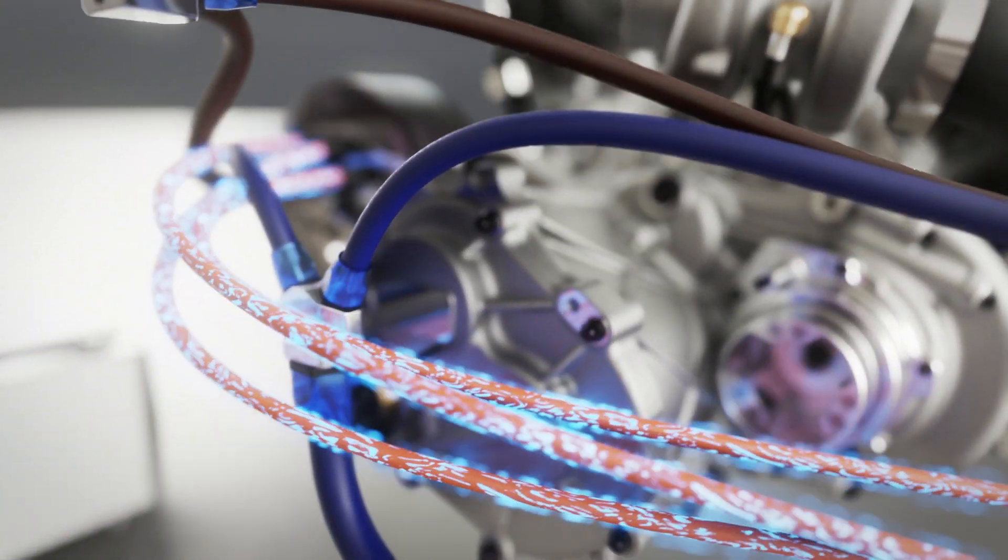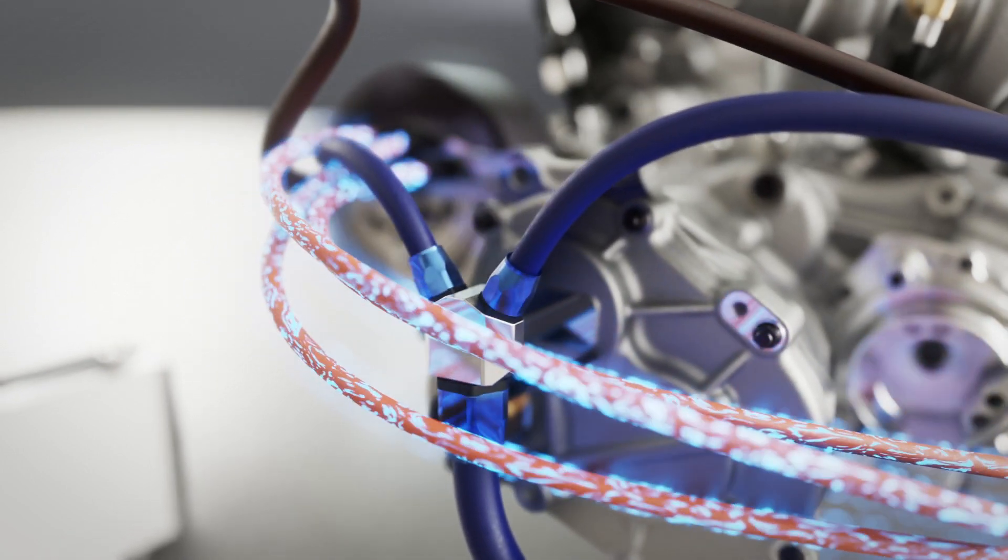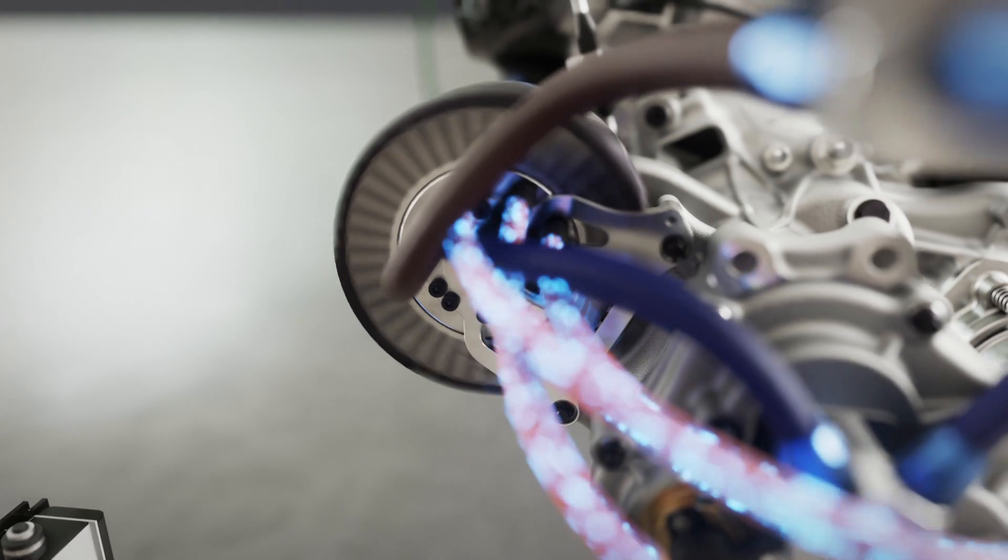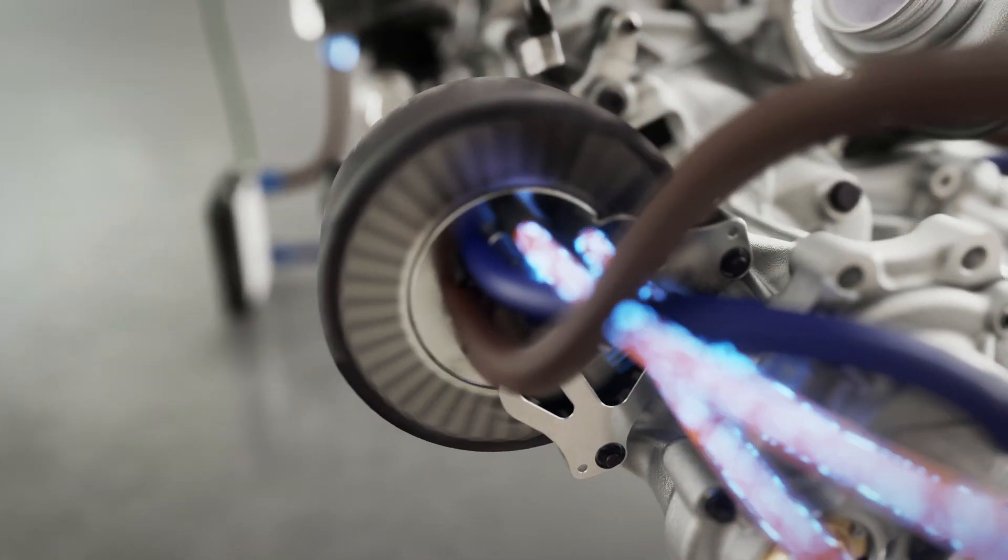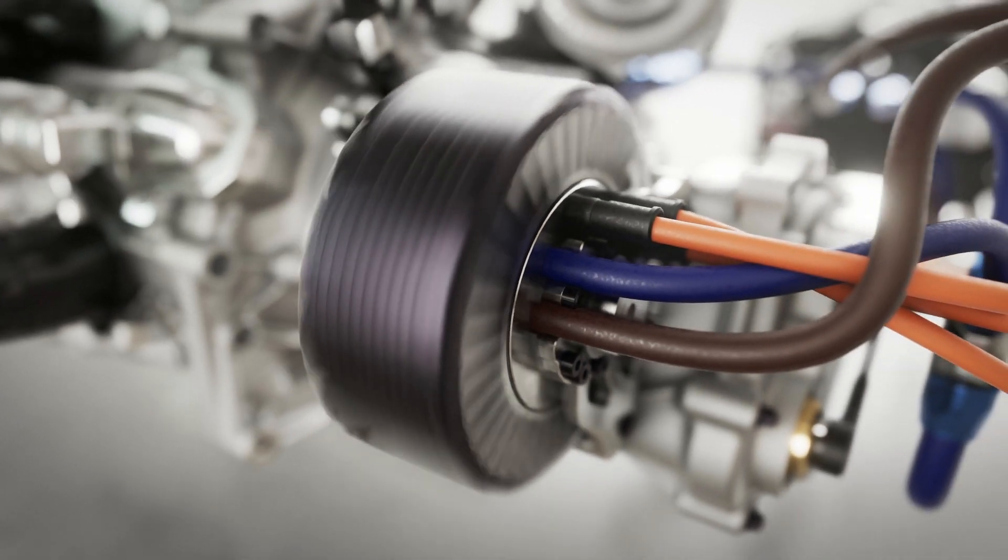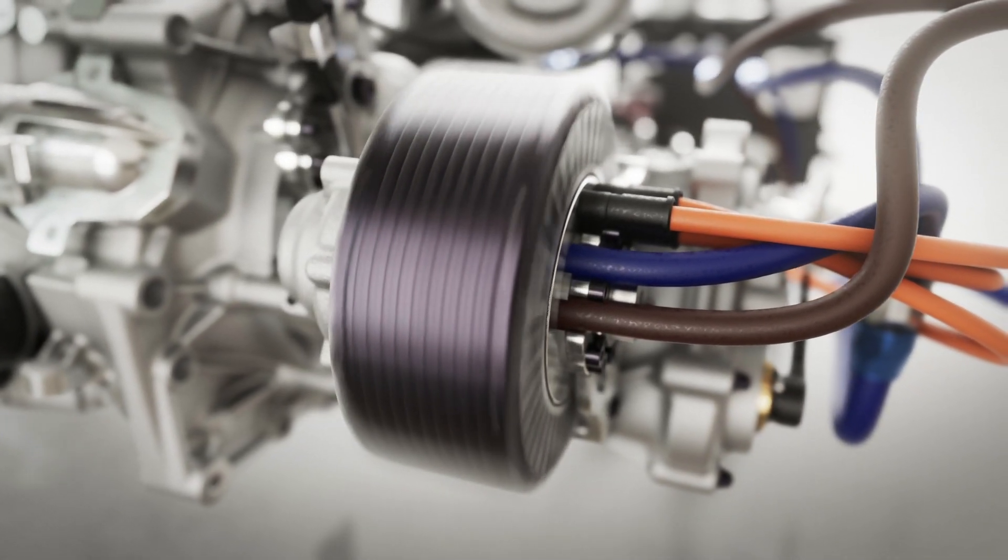The motor generator unit is an axial motor configuration. The stator, where the three phase AC current is delivered, is in the centre of the MGU and is fixed in its position. The rotor is on the outside and directly connects to the X-Track gearbox input shaft on a 1 to 1 ratio.